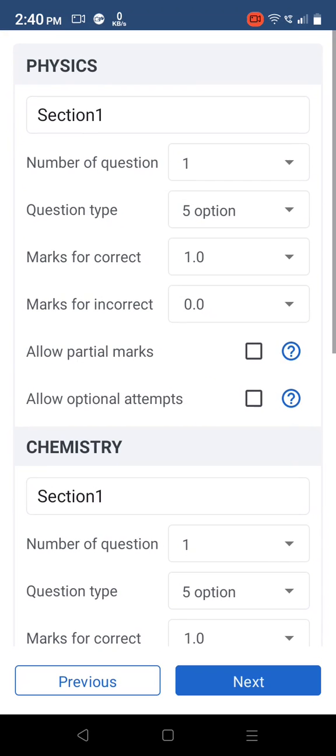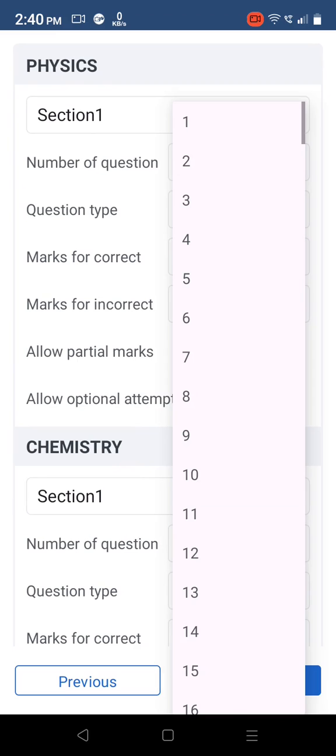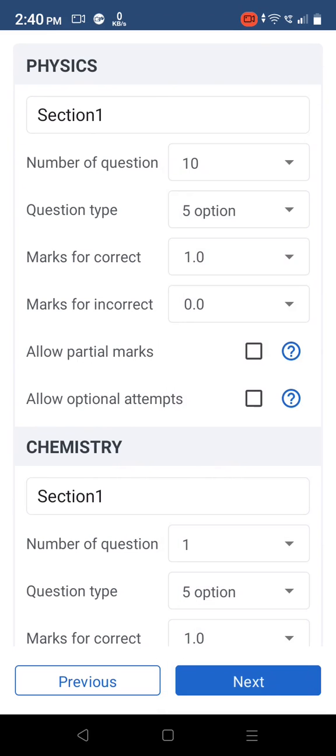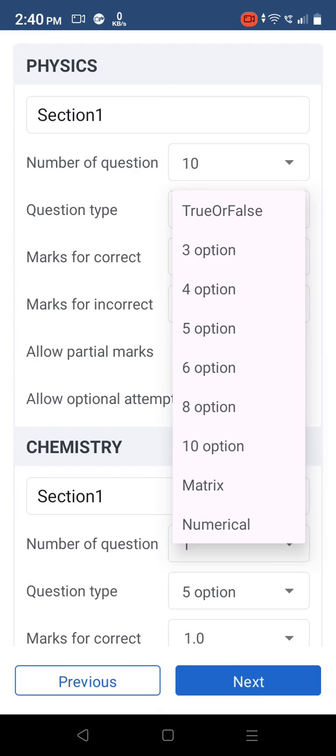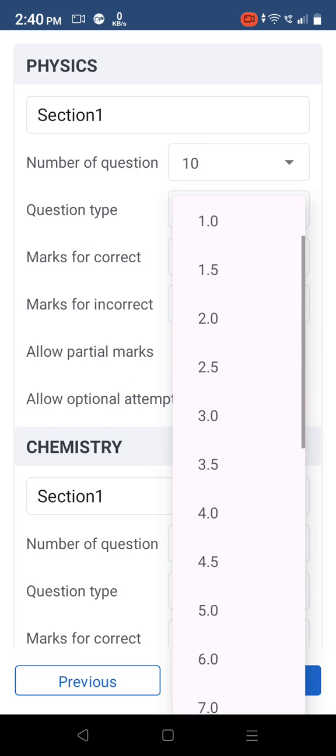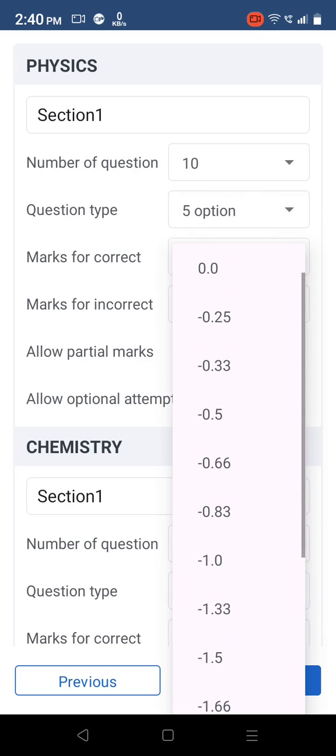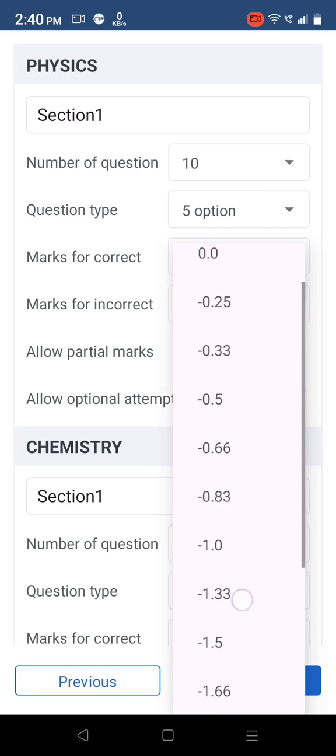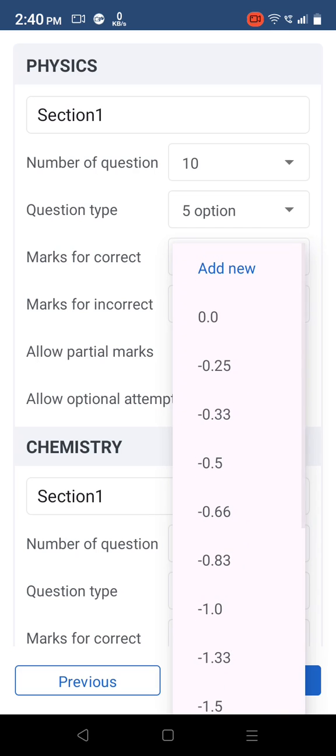Move to the next screen. Add the number of questions in each section. Select the question type for various supported formats. Select marks for correct attempts. You can also add missing numbers in the drop-down by selecting Add New.